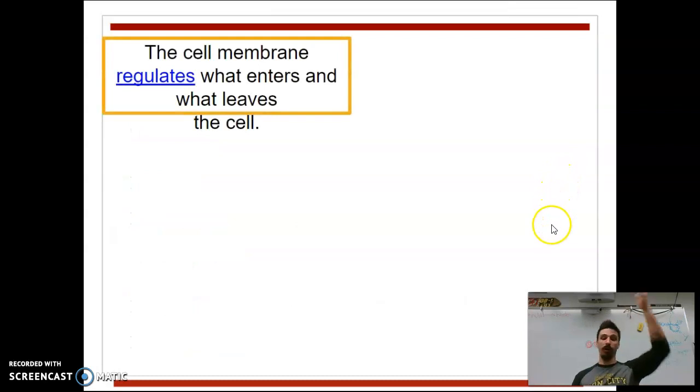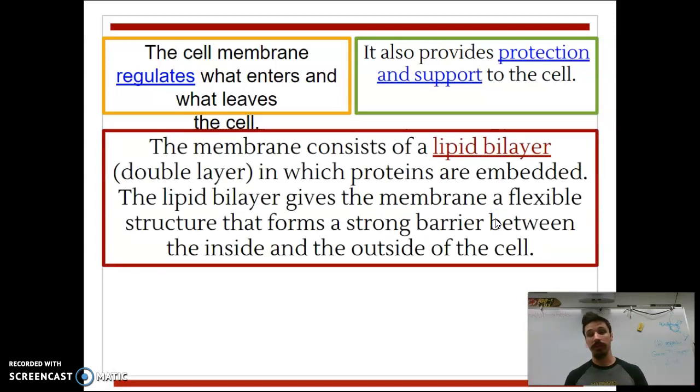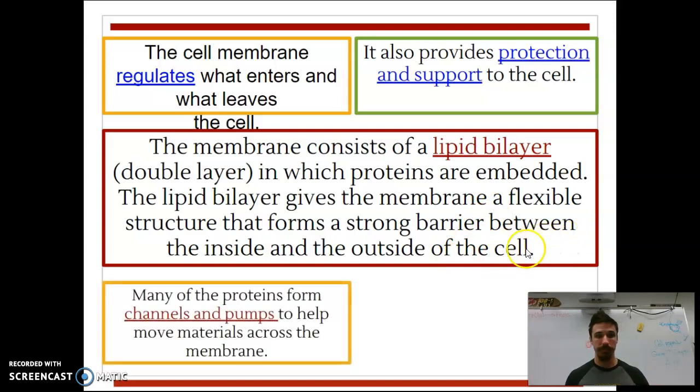So the cell membrane ultimately regulates what enters and leaves the cell to help in an effort to maintain homeostasis, a stable internal environment for the basic unit of life that is the cell. It also provides protection and support. We know that the actual membrane itself is two layers of lipid, one layer here and one layer here. We call it the lipid bilayer. And it has proteins embedded in it. And it's not exactly a solid, but it's not exactly a liquid. It's kind of this like jelly-like plasma where it derives its other name, the plasma membrane, from.